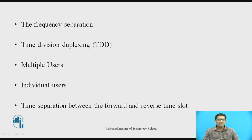In Time Division Duplexing, we use time to provide both the forward and the reverse link. In TDD, multiple users share a single radio channel by taking turns in the time domain. Individual users are allowed to access the channel in assigned time slots, and each duplex channel has both a forward time slot and a reverse time slot to facilitate bi-directional communication. If the time separation between the forward and reverse time slots is small, then transmission and reception of data appears simultaneous to users at both the subscriber unit and the base station.